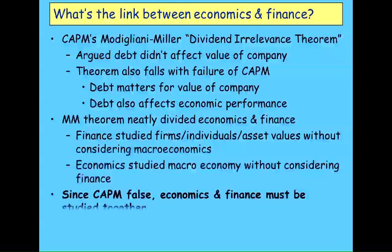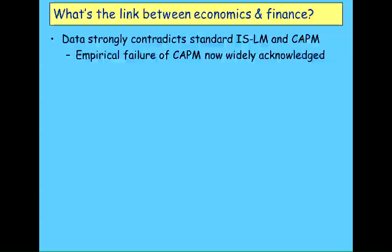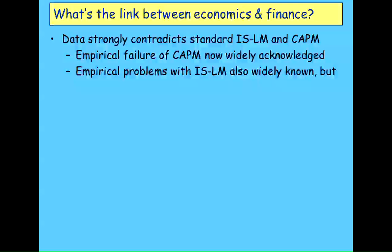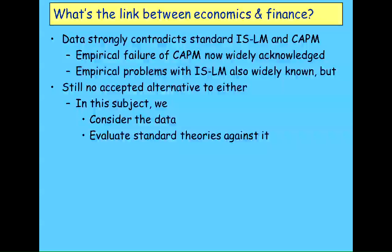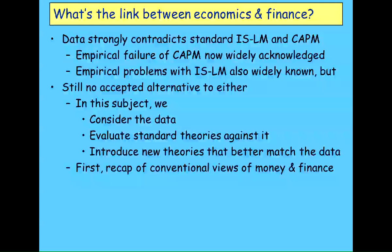That means you need a combined economics and finance, which is what I'm teaching in this course. The data contradicts both the CAPM model and the standard ISLM model. The empirical failure of CAPM is widely acknowledged, yet people continue to teach it. There are lots of debates about the empirical problems of ISLM analysis too, but there's still no accepted alternative in economics. What I'll do instead is look at the data, compare the standard theories to it, and try to introduce theories that have a better match to the data. I'd rather give you something feasible than teach stuff I know is wrong.